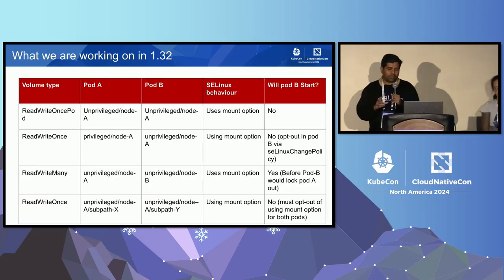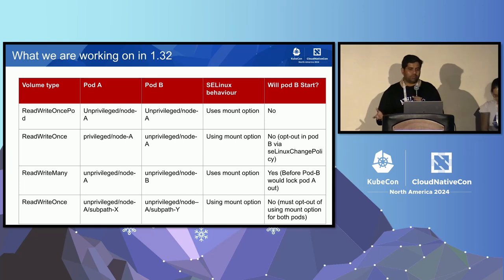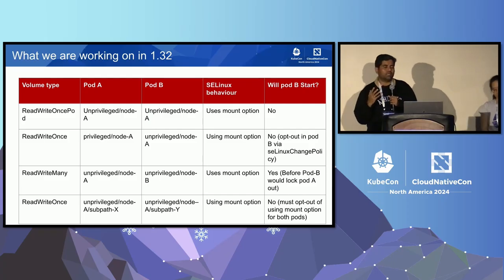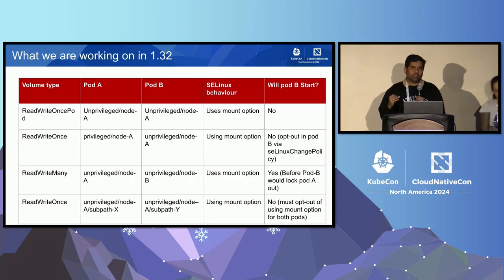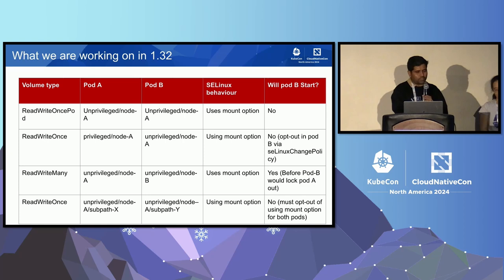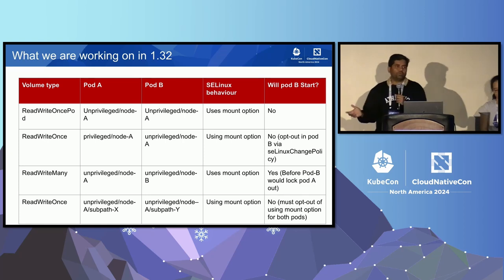There is a brief table of what could potentially break. Essentially, if there's a potential that your pod will be broken once the SELinux mount feature becomes default, you should get metrics, alerts, and documentation to help guide you through the process. And if you don't want to use this feature, you can opt out by setting the SELinux change policy to recursive so that it goes back to the previous behavior.